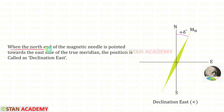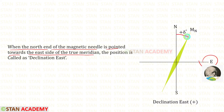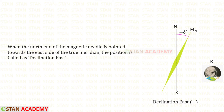When the north end of the magnetic needle is pointed towards the east side of the true meridian, the position is called declination east. The bearings are taken from the magnetic north. If you want to find the bearings from the geographic north, we have to add the declination so that we will get the true bearings.